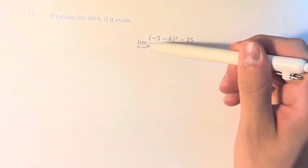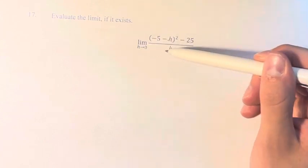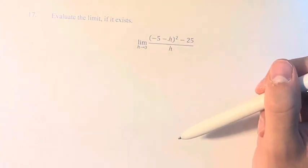What we have to do is simplify this fraction to get rid of this h in the denominator, because if we just plug in 0 directly we're going to be dividing by 0 and we can't do that.